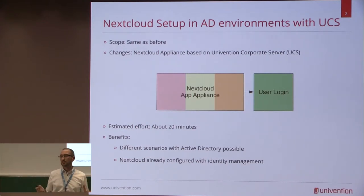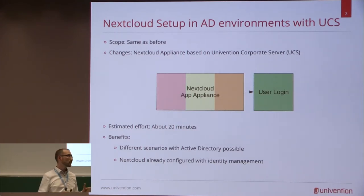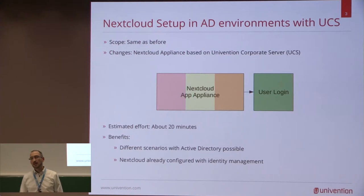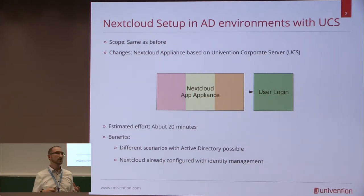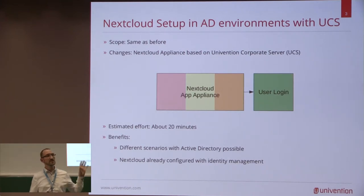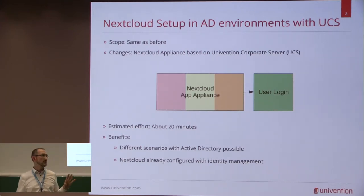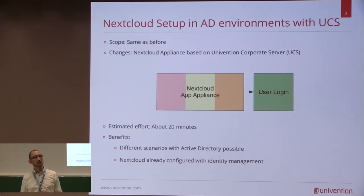So now let's change some prerequisites. The scope is the same, but what you change is: you download the Nextcloud appliance from the Nextcloud website. This appliance is based on Univention Corporate Server, which is a Debian derivative. The advantage is that Univention Corporate Server already includes all the connections and everything you need to connect to an Active Directory server. The estimated effort for this setup is about 20 minutes, after which all the users in your Active Directory can log in to Nextcloud.